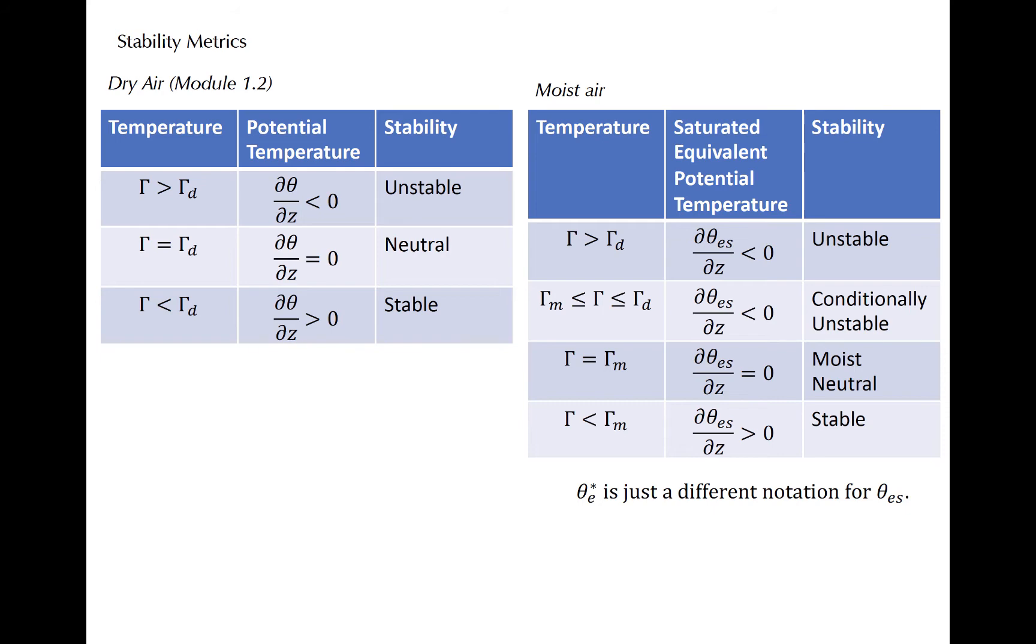If the environmental lapse rate exceeds the dry adiabatic lapse rate, the environment is absolutely unstable. In this case, the slope of the temperature profile would exceed that of a dry adiabat. If it is less than the moist adiabatic lapse rate, meaning that the vertical gradient of theta E S is positive, then the environment is absolutely stable. In this case, the slope of the temperature profile would be less than that of even a moist adiabat. A moist neutral temperature profile is one that follows a moist adiabat.